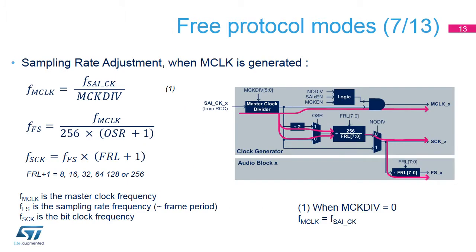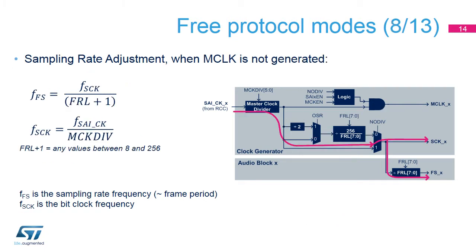The clock generator is needed for master mode communications. It is used to adjust the sampling rate of the serial audio interface. The clock generator provides the root frequency for the MCLK, SCK, and the FS. When the master clock is generated, the frame length must be a power of 2. The ratio between the FS frequency and the MCLK frequency is set to 256 or 512 according to the OSR bit. The clock SAI is provided by the RCC block. When the MCLK is not generated, the frame length can take any value from 8 to 256. In this case, the frequency of the SCK bit clock is directly given by the clock received on the SAI-CK input, divided by the MCK div value.